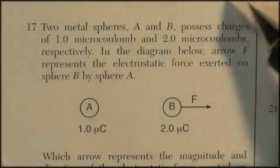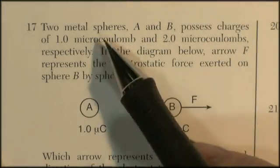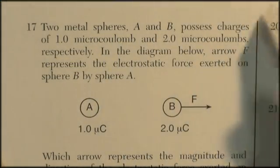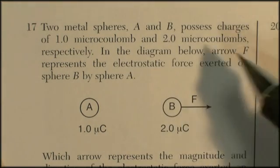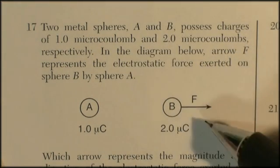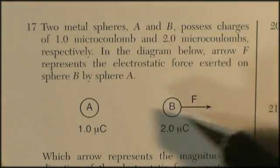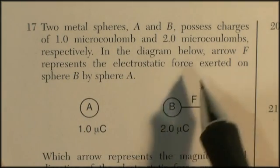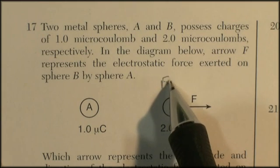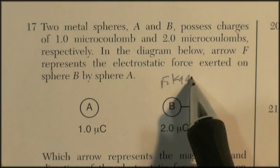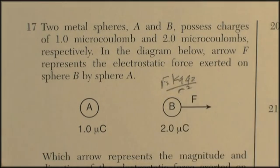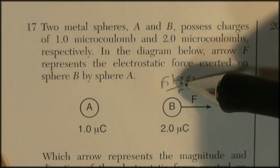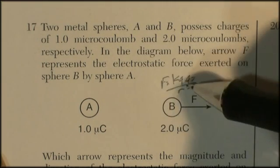Electrostatic question. Two metal spheres, A and B, possess charges of 1 microcoulomb and 2 microcoulombs, respectively. In the diagram below, arrow F represents the electrostatic force exerted on sphere B by sphere A. So the equation is force equals kQ1Q2 over r squared, and one charge is twice as much as the other charge.